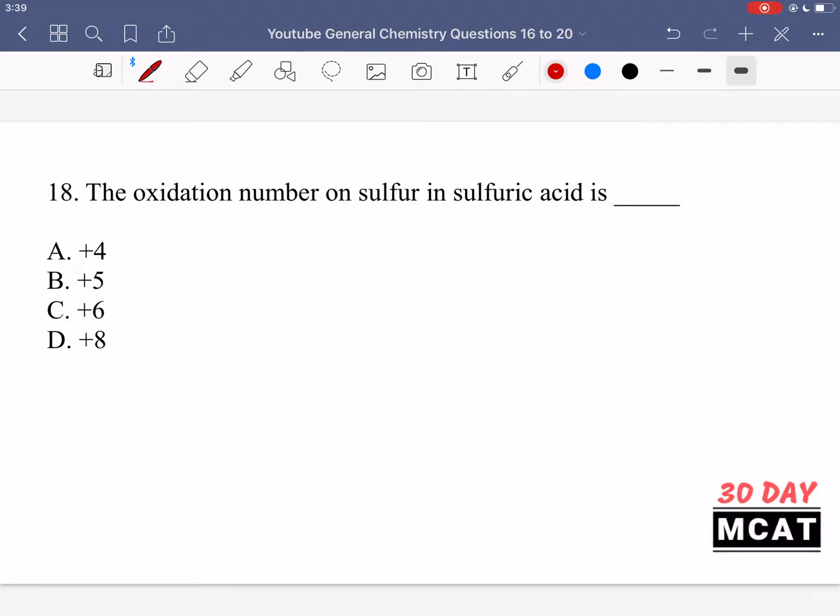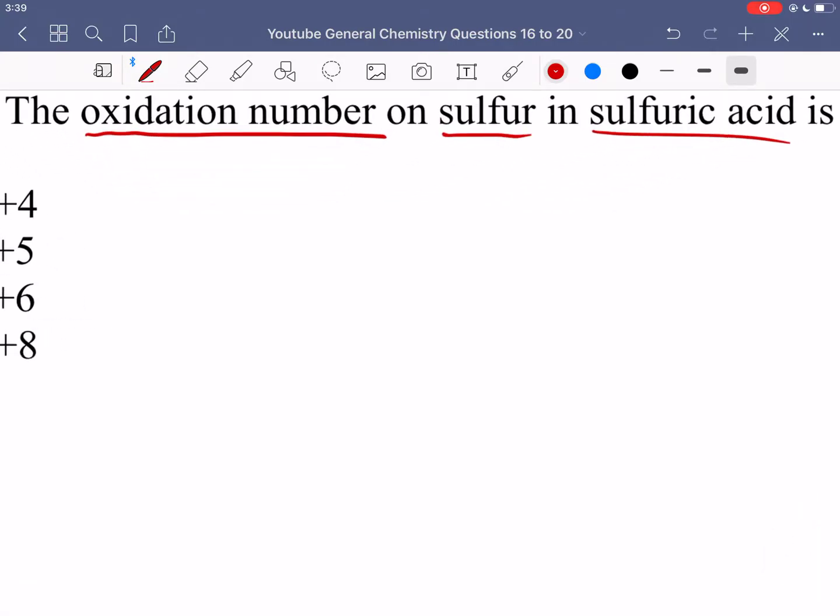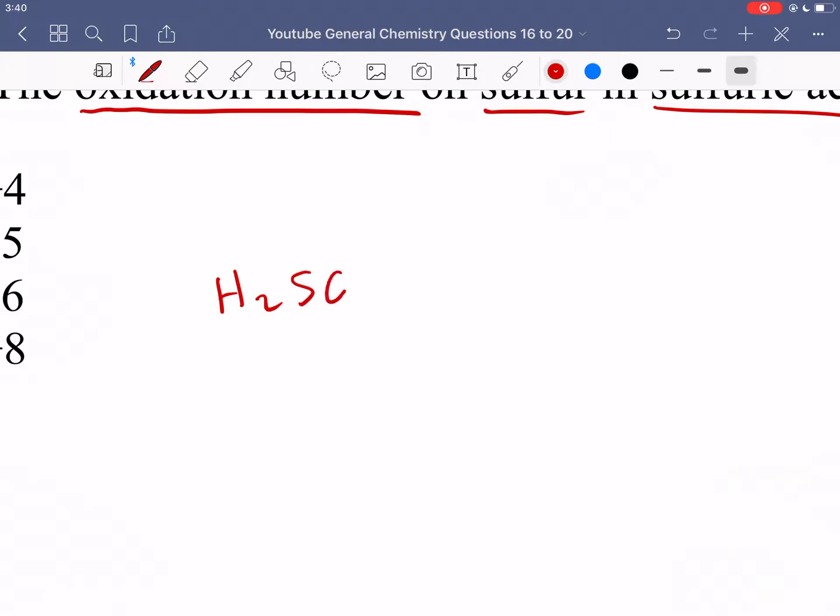Question 18 is asking for the oxidation number on sulfur in sulfuric acid. The chemical formula for sulfuric acid is H2SO4. Hydrogens have a plus one oxidation number, and since there are two, overall is contributing plus two. Oxygen has a negative two oxidation number, and since there are four, it's contributing negative eight.